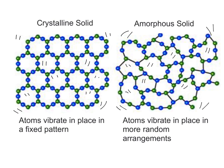They're both considered solids because the particles are frozen in place. Crystalline solids are things that form crystals — like metals, salts, rocks, and minerals. Amorphous solids are things like glass or wax — things you think of as almost soft solids. Anything that you don't think of as forming a particular crystal shape would be an amorphous solid.